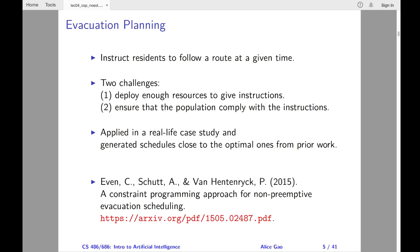Several works addressed this issue by assigning a single evacuation path to each residential area. Second, evacuees may not follow the instructions if there are forks in the road. The latest work addressed this issue by constructing a forest of evacuation trees. In each tree, the route ends at a safe place and the leaves are the residential areas.